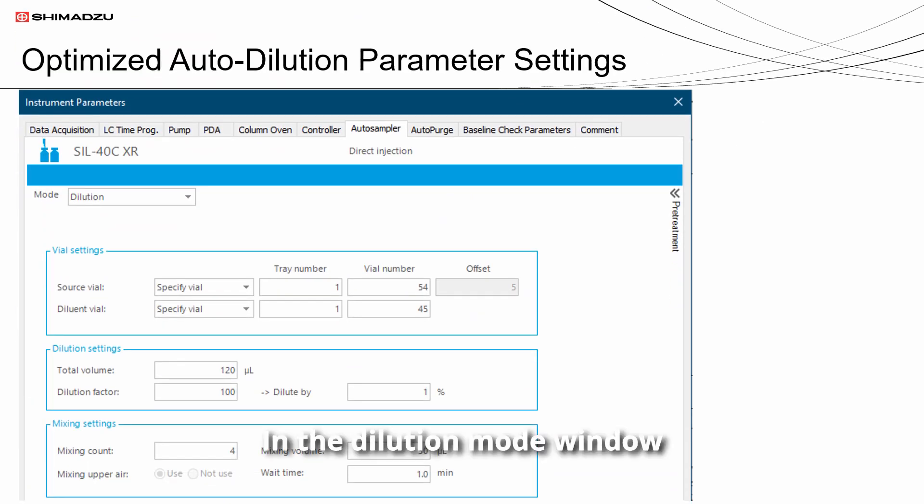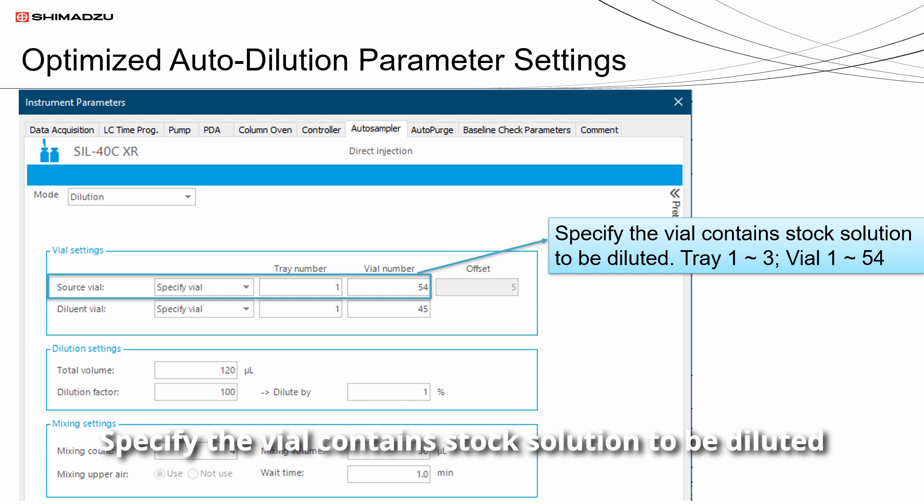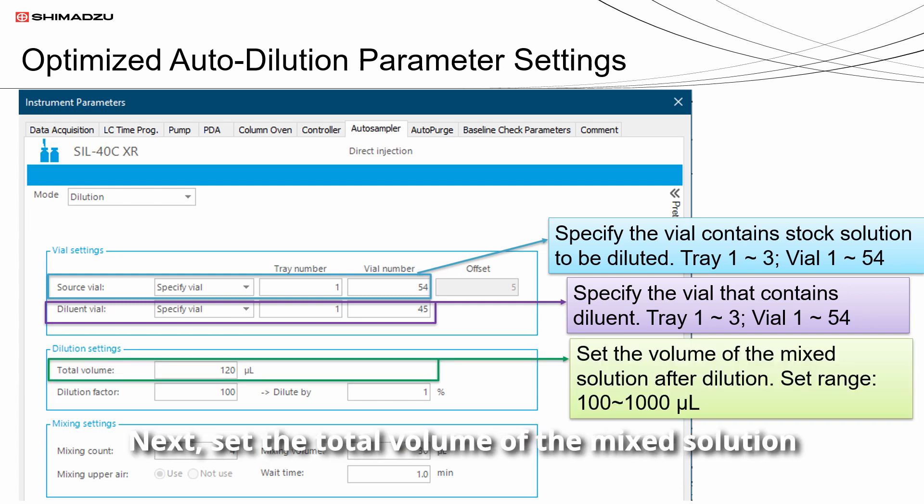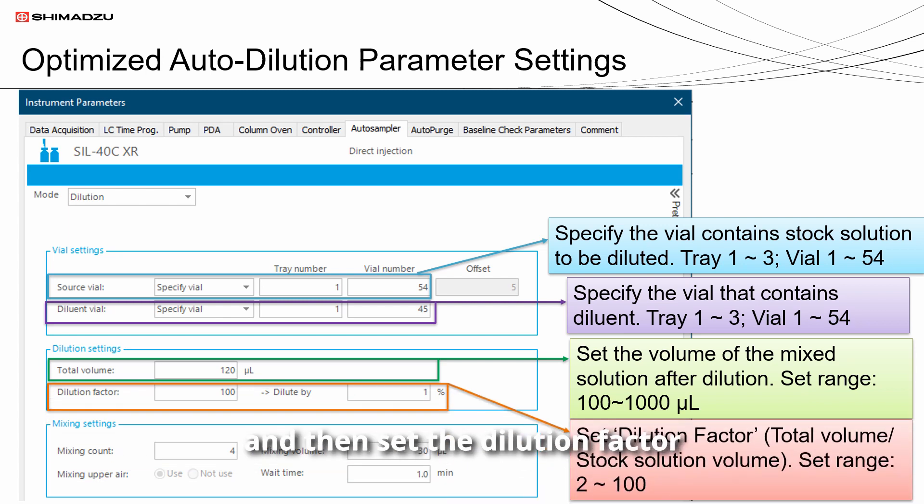In the dilution mode window, specify the vial that contains stock solutions to be diluted. Then specify the vial that contains diluent. Next, set the total volume of the mixed solution after dilution. Setting range is 100 to 1000 microliters. Then set the dilution factor, and the setting range is 2 to 100.